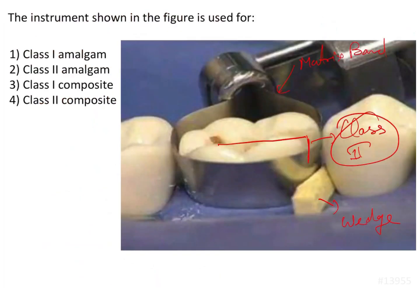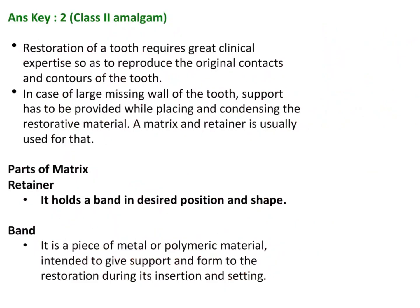In the figure, we have the Toffelmyer or universal matrix band shown, which is used for conventional Class 2 amalgam restoration. Restoration of a tooth requires great clinical expertise to reproduce the original contact and contour of the tooth, and the matrix and retainer are key instruments for providing the missing wall in Class 2 cavities.